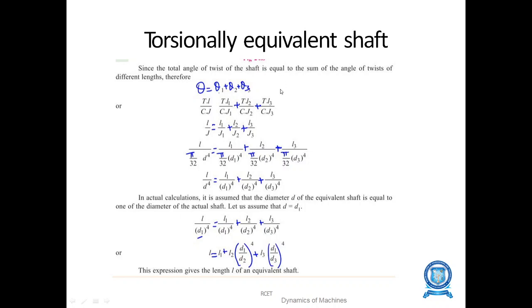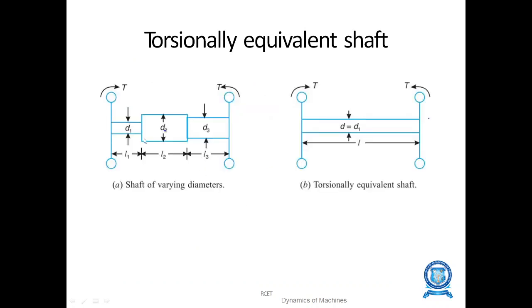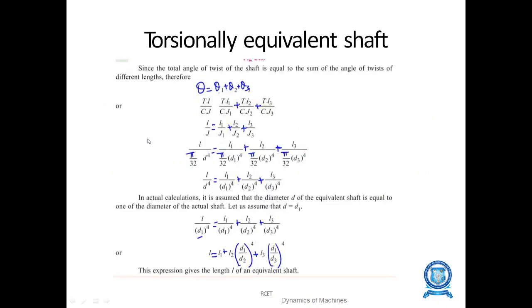The torsionally equivalent shaft formula is L equal to L1 plus L2 into D1 by D2, the whole to the power 4, plus L3 into D1 by D3, the whole to the power 4.